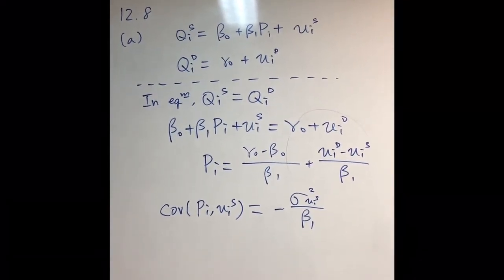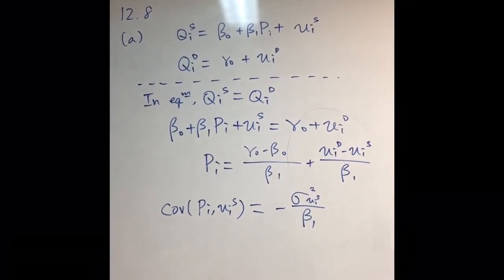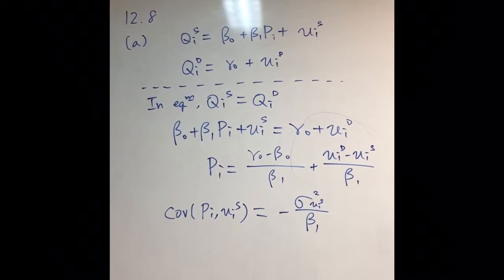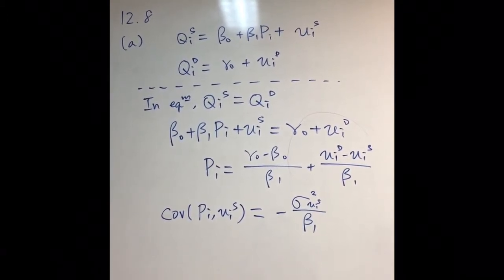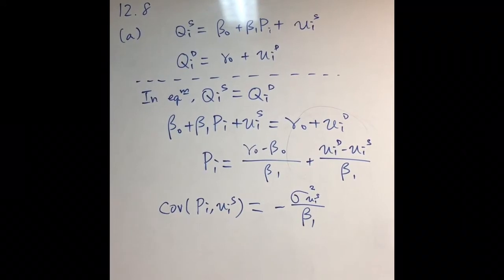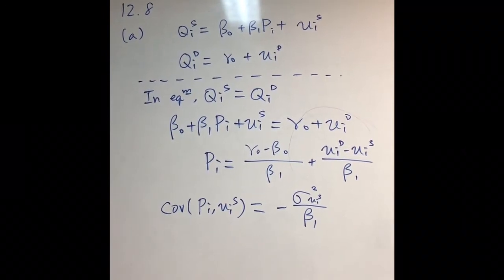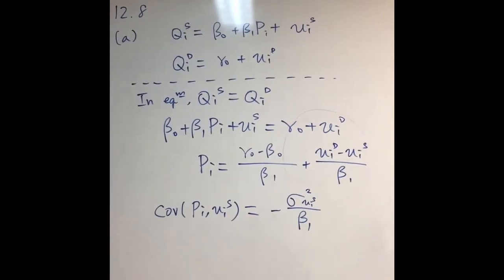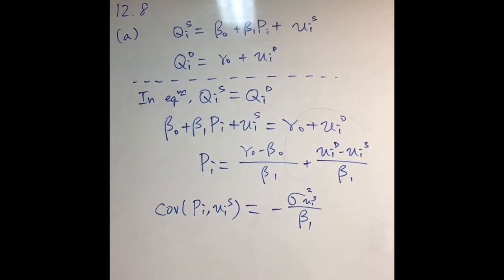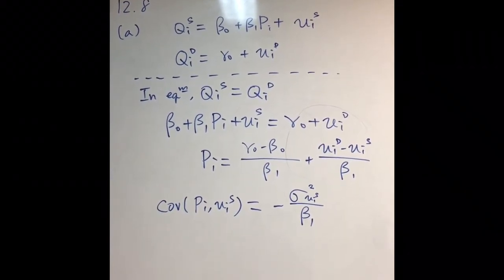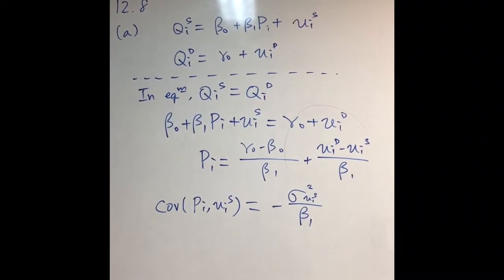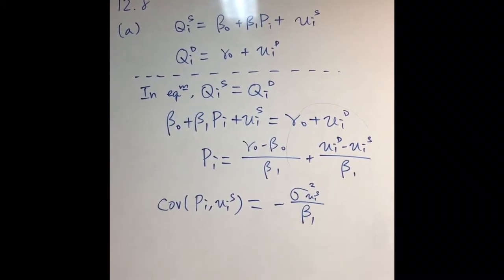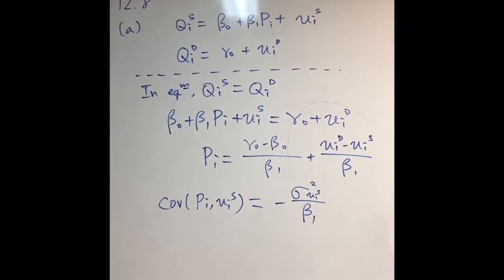This is the solution of problem set 2, question 12.8. The first question asks you to show that PI and UIS are correlated. To do this, you first need to express the price as a function of all other variables, especially expressing it as a function of UIS.